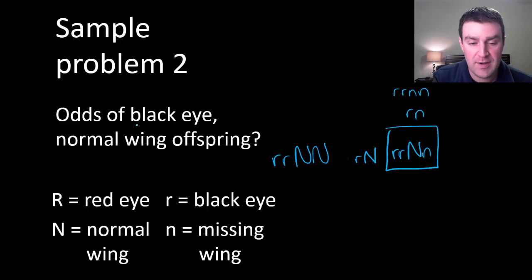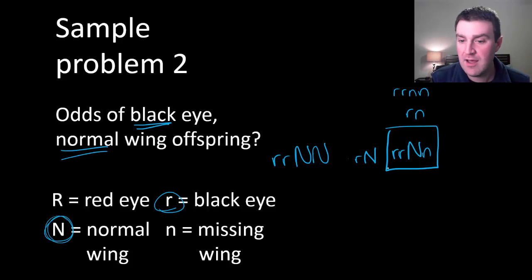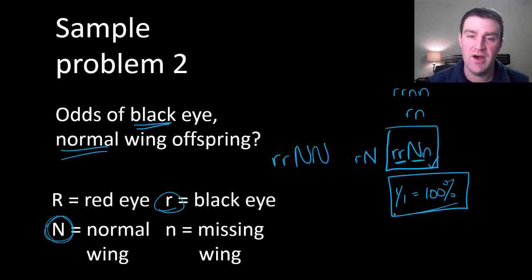That has to be the offspring that I make. And we're looking for offspring who have black eyes and normal wings. If I'm looking for black eyes I need both lowercase r's. If I'm looking for normal wings I'm looking for at least one capital N. Both lowercase r's and at least one capital N. As it turns out all the offspring will look that way and that's the type that I'm looking for. So a hundred percent of the flies will look that way.